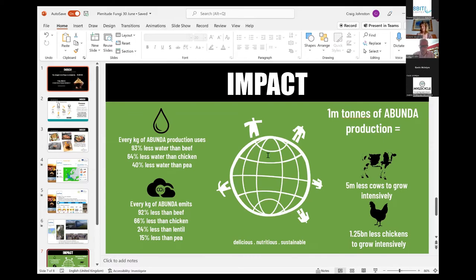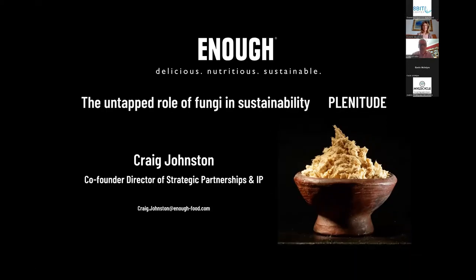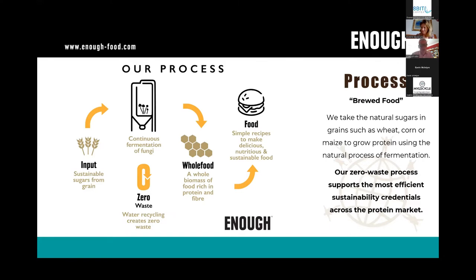We are excited to hear from Craig Johnston from Plenitude. Plenitude is utilizing fungi as a future food source, a mycoprotein, and bioplastic. Hi there, greetings from Scotland. Enough is a food tech company established seven years ago, and we make very sustainable protein. I'm also going to talk about Plenitude, which is a large collaborative project. Simply, our process: we take sugars from grains, we have continuous fermentation of fungi, and the biomass is our food. We use that in very simple recipes to make delicious, nutritious, and most importantly, sustainable food.